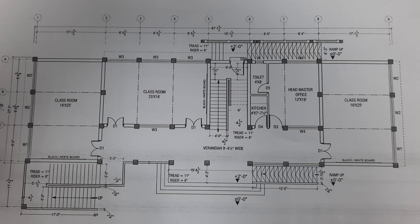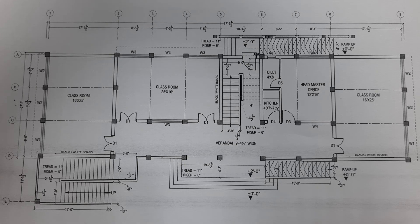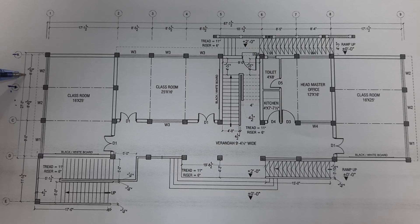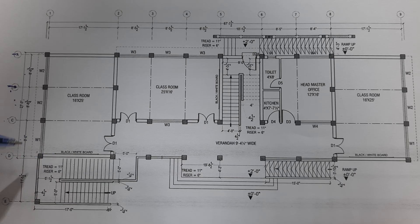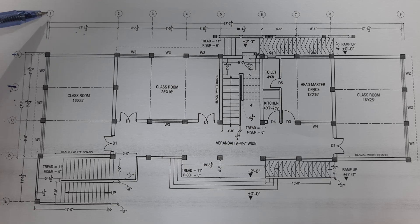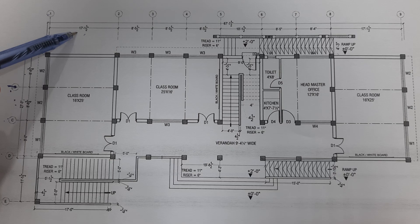We have four columns on the left side. Column spacing center to center: A to B is 8 feet 6 inches, B to C is 8 feet 6 inches, C to D is 9 feet — all by the centerline method. The width is 17 feet 1.5 inches, so column 1 to 2 spacing is 17 feet 1.2 inches.